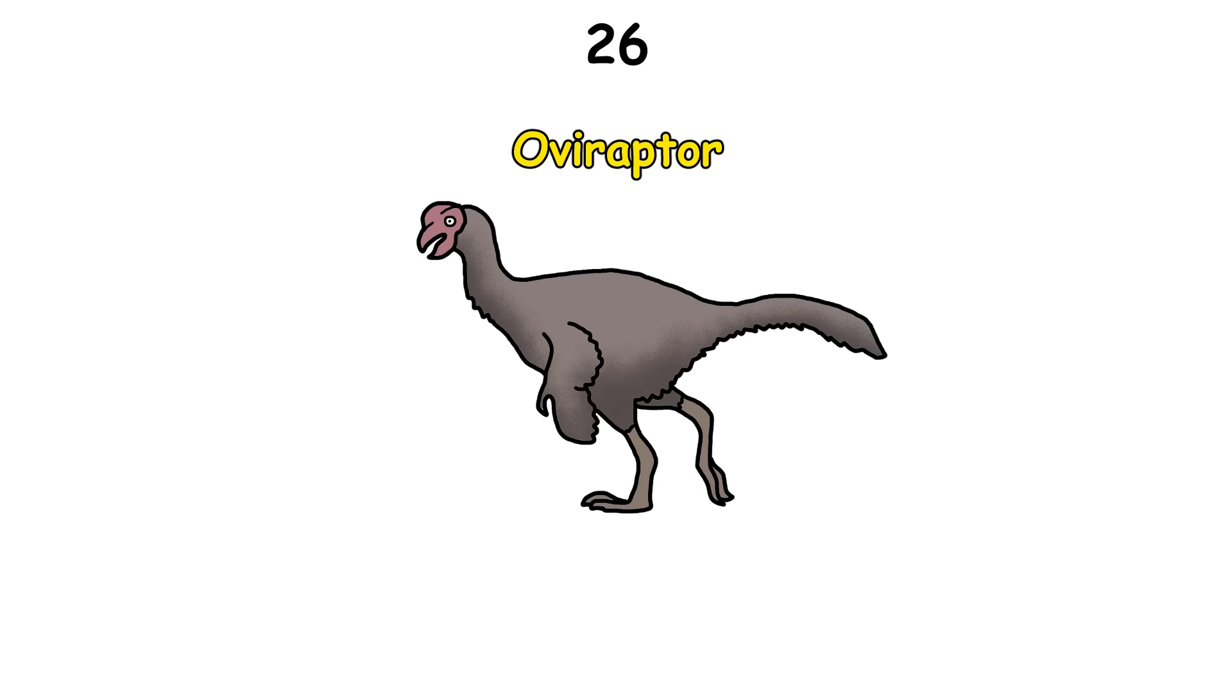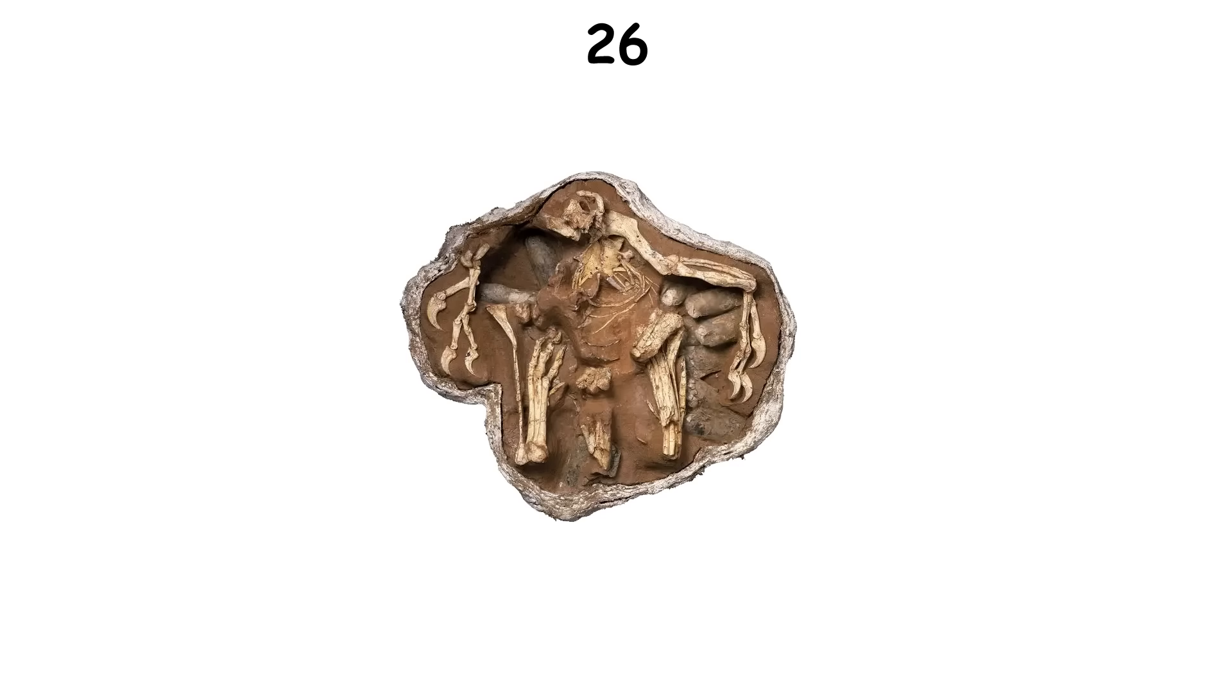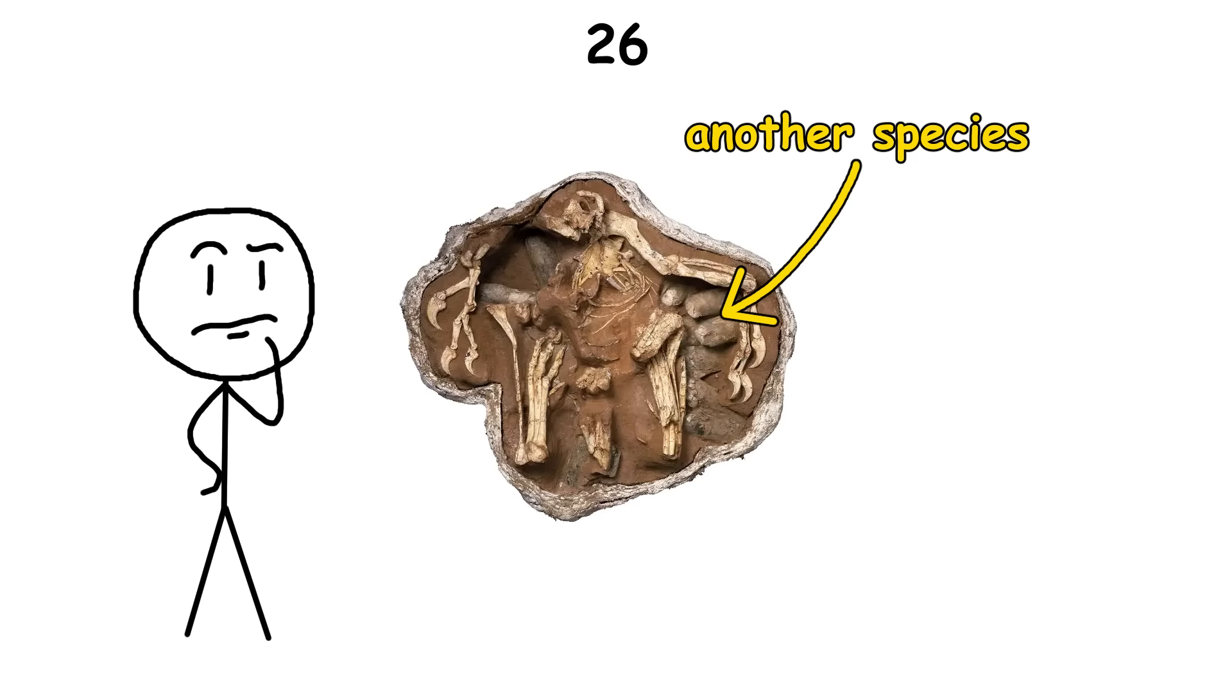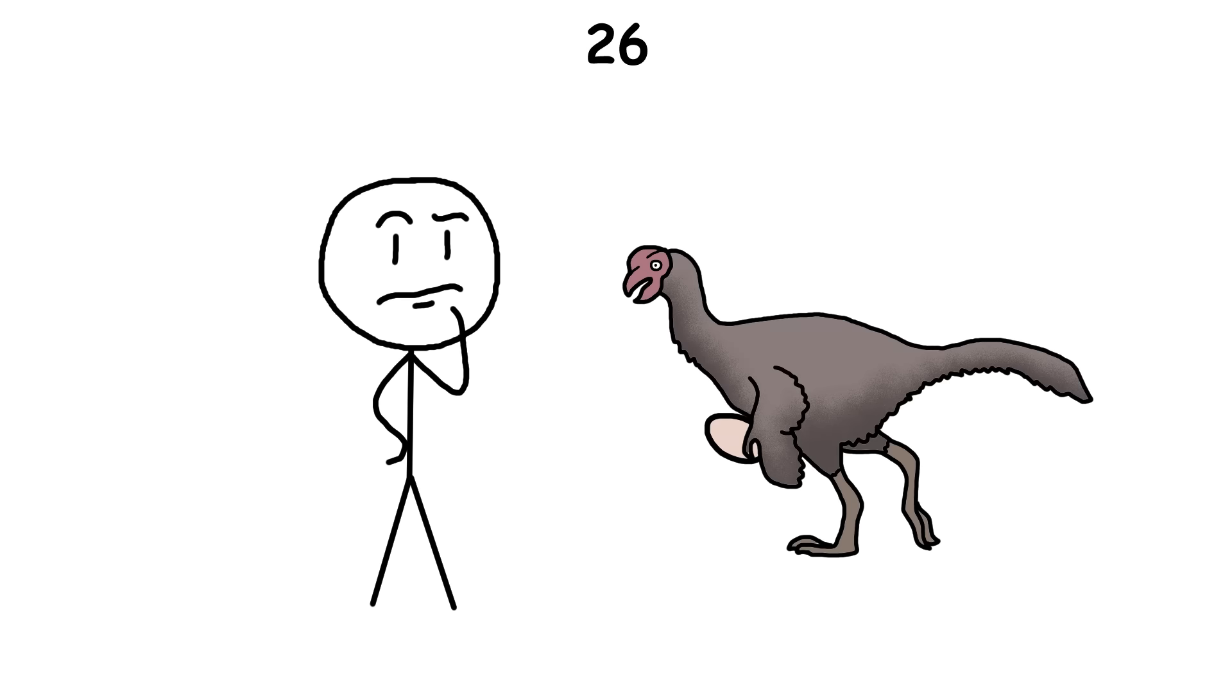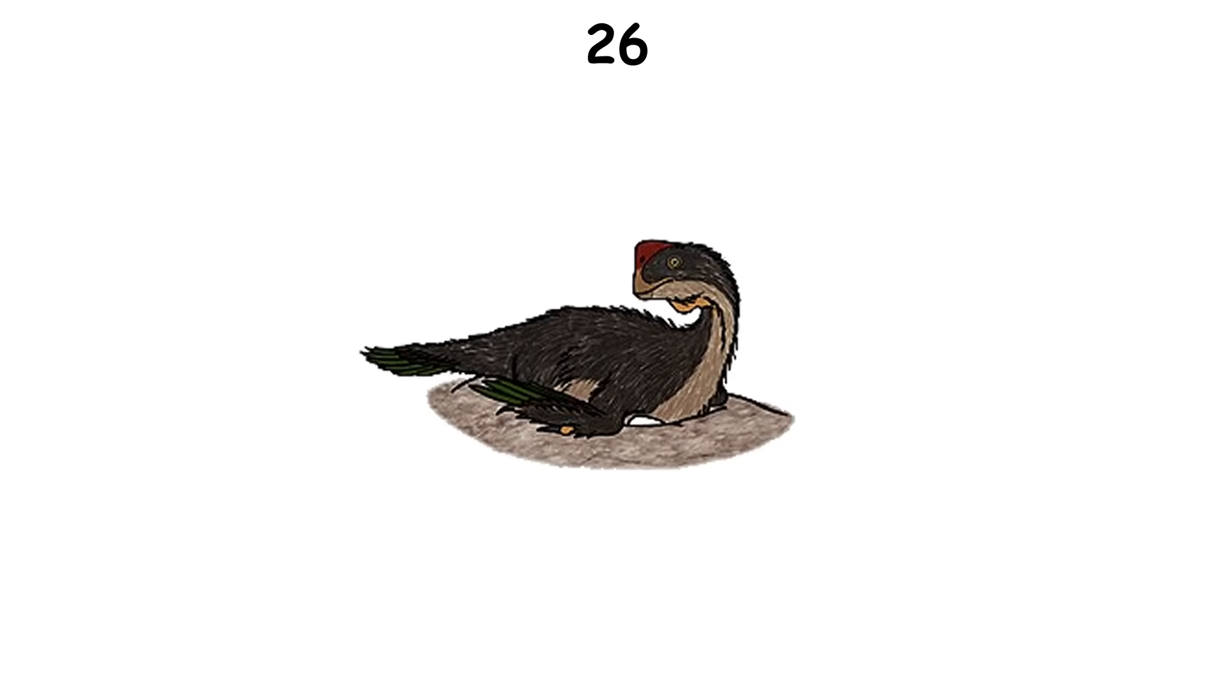The dinosaur called Oviraptor got its name, which means egg thief, because the first fossil was found lying on a nest of eggs that scientists thought belonged to another species. So for 75 years, people believed it stole eggs. Later on, however, they discovered that the first Oviraptor wasn't a thief at all. It was probably just a parent that died while guarding its own nest.